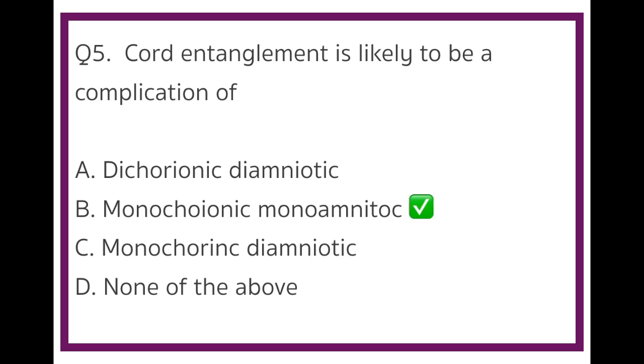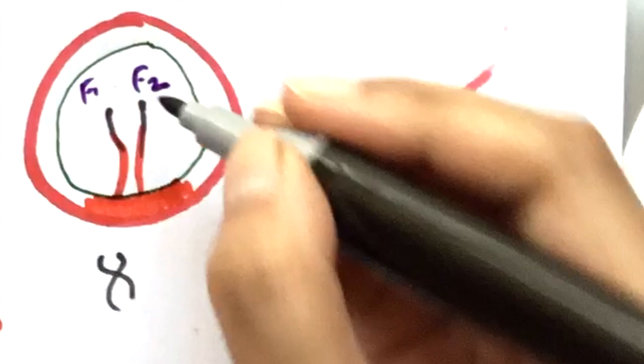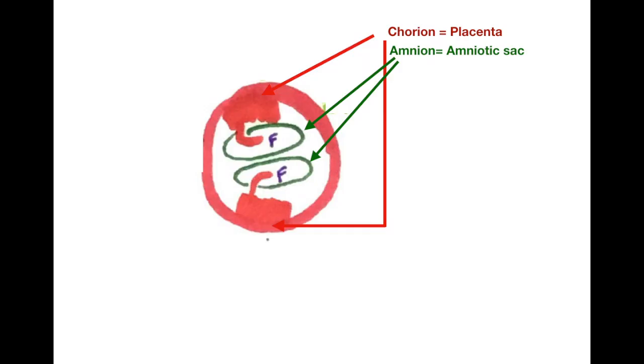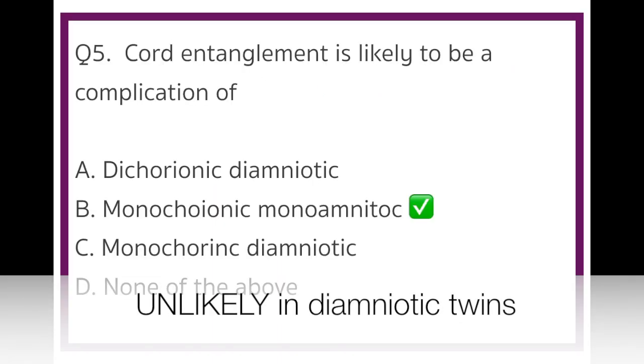Cord entanglement is possible when the twins are close to each other. This is seen in monochorionic monoamniotic twins as there is very little space between them. This increases the chance of their cords to get entangled. This is not possible if the twins are in two separate amniotic sacs. So, it's highly unlikely in diamniotic twins.